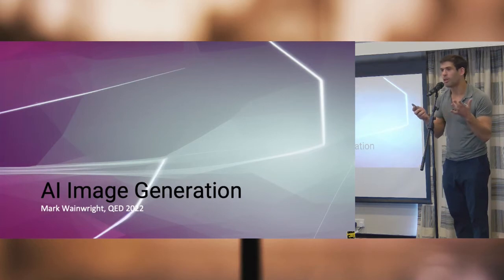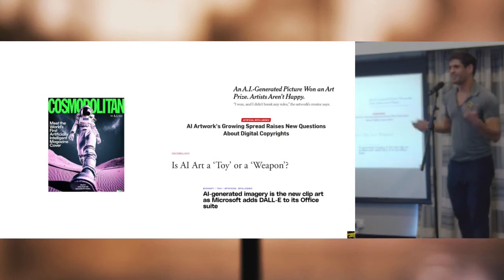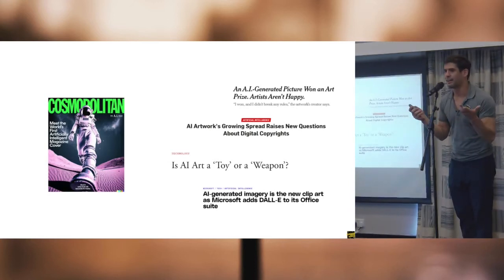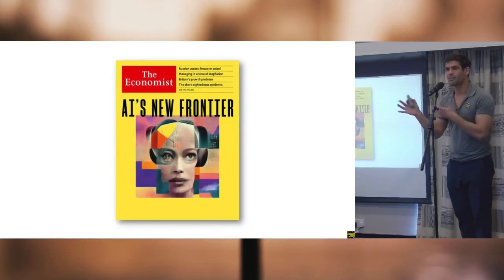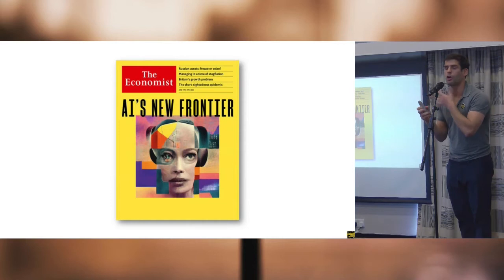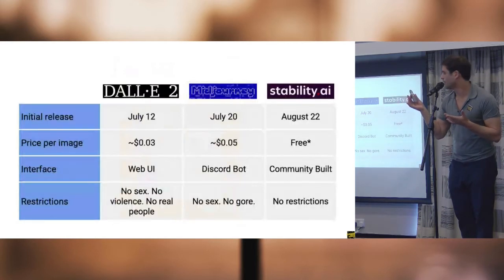But then the people at Cosmopolitan magazine did this. They typed in a wide-angle shot of a female astronaut walking on the surface of Mars in an infinite universe, and then they put it on the cover. And The Economist did basically the same thing, and these were in June. So they were doing previews of various programs, which came out in July.